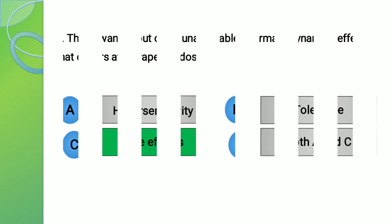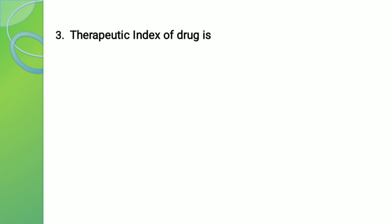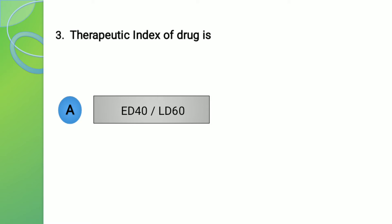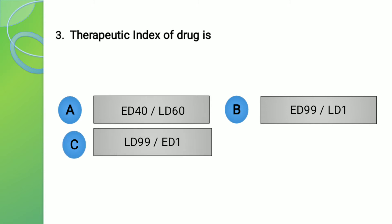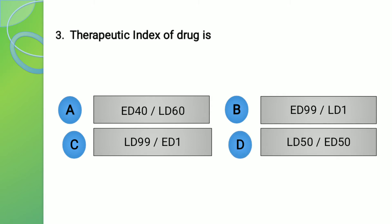Moving to question number 3. The question is: the therapeutic index of a drug is given by which formula? The options are: A - ED 40 upon LD 60, B - ED 99 upon LD 1, C - LD 99 upon ED 1, and D - LD 50 upon ED 50.